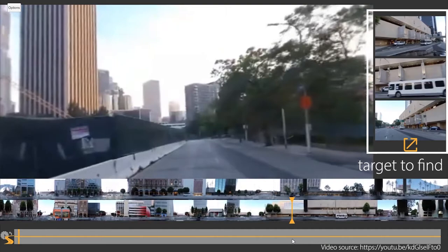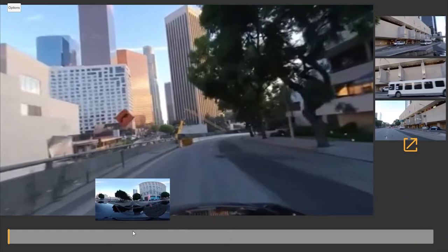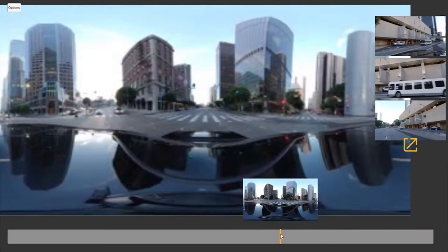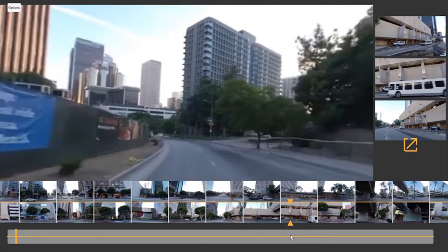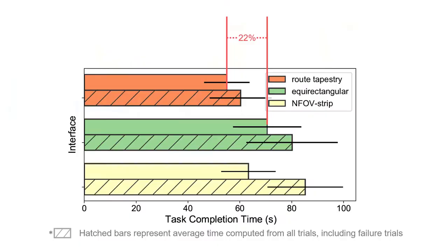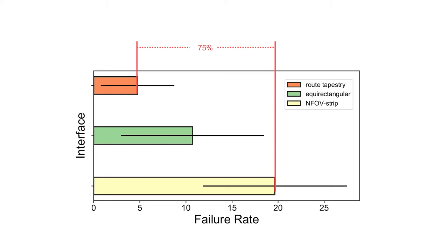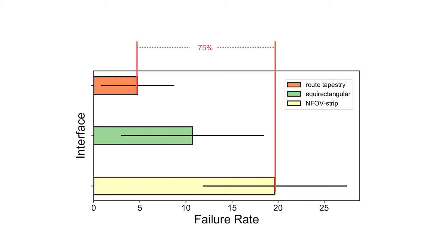We compared route tapestries with two baseline interfaces using a target-seeking task. One interface uses equirectangular frame previews and is modeled on the YouTube 360 video player. The other interface uses two rows of normal field of view thumbnails as its previews — a discrete alternative to route tapestries. Our results show that route tapestries allow users to locate targets 22% faster than with YouTube-style equirectangular previews, and reduce the failure rate by 75% compared to the row of thumbnail previews. Please see our paper for details.